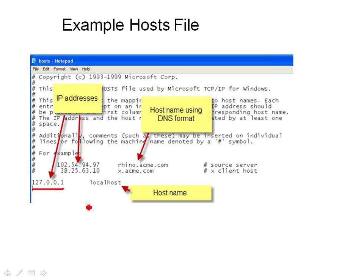Here is an example of a host file taken from an XP machine. You can see there's only one entry in there, and that's the loopback address 127.0.0.1, mapped to a name called localhost. So if you go to your computer and type ping localhost, you'll be pinging this loopback address. There are a couple of other entries in this host file, but they're commented out, so they're not used — they're just for example.